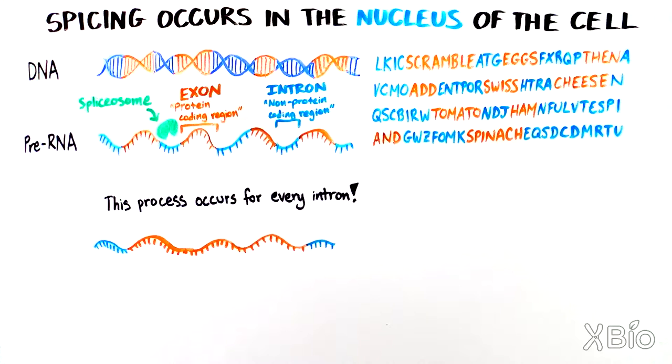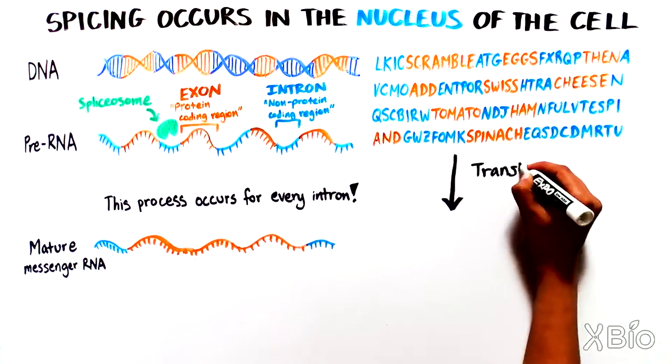The final spliced product is a mature messenger RNA, or in the case of your brunch, an omelette with Swiss cheese, tomato, ham, and spinach. The mature messenger RNA is now ready to be transported out of the nucleus and into the cytoplasm, where it can be translated into protein.